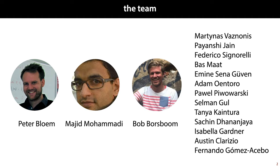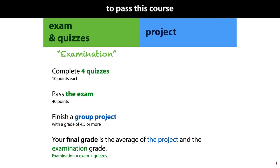Now, let's start with the most important thing: what do you need to do to pass the course? Three things. You need to pass four online quizzes, you need to pass the final exam, and you need to complete a group project. If you do this, you get two grades — one for the combined quizzes and exam, what we call the examination part of your grade, and one for the final project. If both grades are high enough, then your final grade is the average of the two.